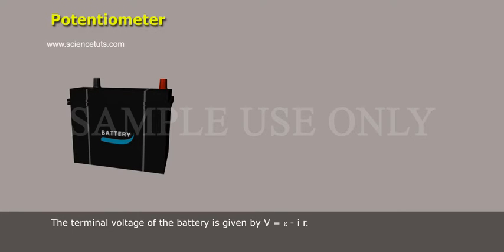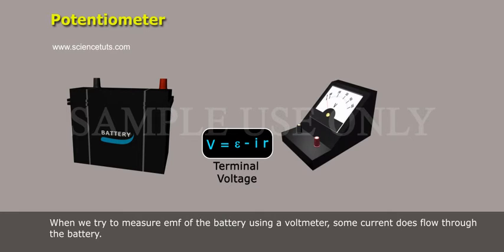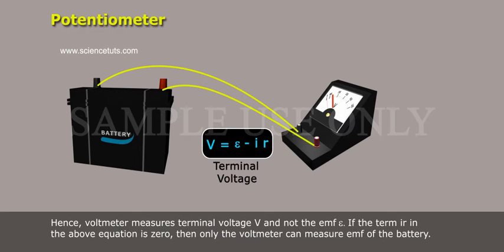The terminal voltage of the battery is given by V equals to Epsilon minus I R. When we try to measure EMF of the battery using a voltmeter, some current does flow through the battery. Hence, the voltmeter measures terminal voltage V and not the EMF Epsilon.